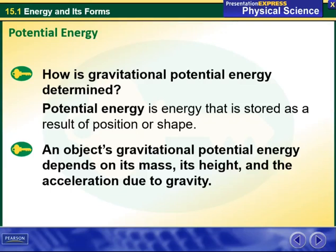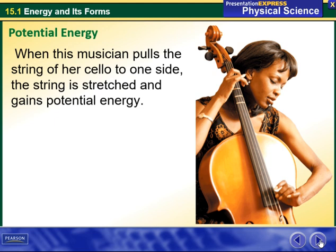Hello my dear students and welcome to this week's overview. During this week we'll be talking about potential energy. How is gravitational potential energy determined? Technically, potential energy is energy that is stored as a result of position or shape. An object's gravitational potential energy depends on its mass, its height, and the acceleration due to gravity.